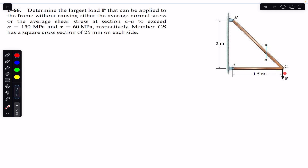Since we want to find the largest force P, we need the relationship between the force in member BC and P. For that, we consider joint C. At joint C, the AC member is in compression, so its force acts towards joint C, and member BC is in tension, so its force acts away. When three forces act at a joint in equilibrium, they must form a closed triangle — the resultant equals zero.